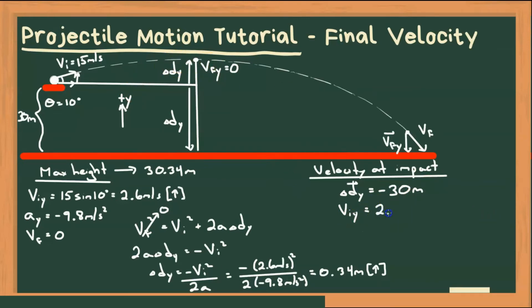Initial velocity is, we calculated it before, 2.6 meters per second up. And of course we know the acceleration due to gravity, once again, ay, which is down. So minus 9.8 meters per second squared. So we can calculate final velocity in y for that point then, right before we hit the ground at that displacement. And we'll use this equation,